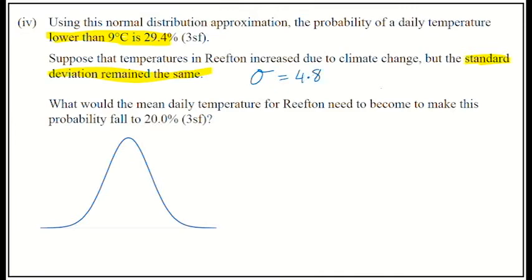However, the mean that we had, this one up here had a mean of 11.6, but that mean is now going to change to something else. And it's saying, what would that new mean be in order for the probability to fall to 20 percent?